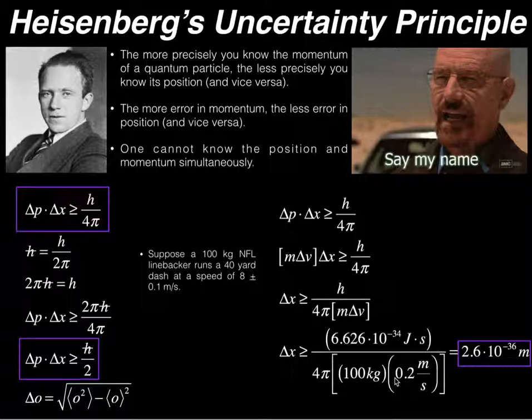Now, what is their uncertainty? Well, the speed that he was clocked at was 8 meters per second, but it could have been 0.1 above that or 0.1 below that. In other words, it could have gone from 7.9 to 8.1, which those two numbers have a difference of 0.2. So the uncertainty in his velocity is 0.2 meters per second.